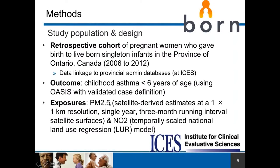In terms of exposures, we got information on PM2.5 and NO2. PM2.5 was gathered from satellite estimates available at a one-by-one-kilometer resolution on a three-month basis for each year between 2006 and 2012. We also used a national land use regression model that we temporally scaled so that we could capture trimester-specific exposures. Both exposure assessment methods were used so that we could go beyond just urban areas and also look at rural areas where exposures to these pollutants can also occur.